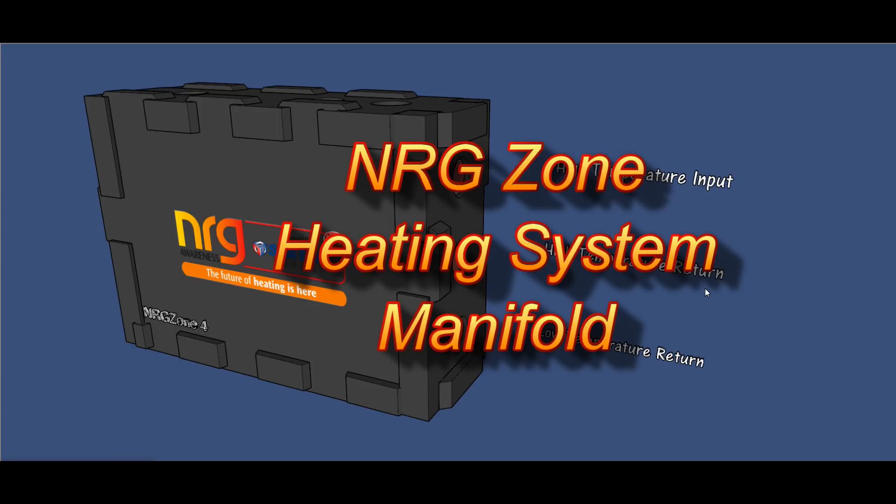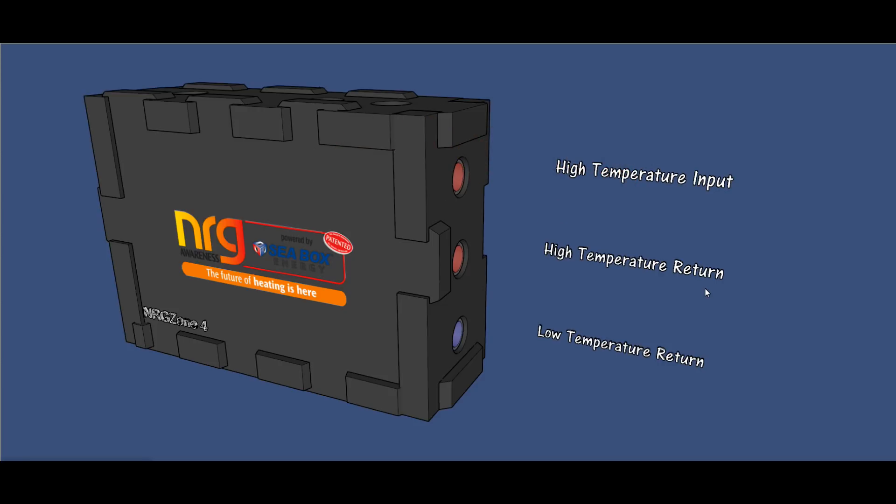Here we have the Energy Zone Manifold. This is the smaller of the standard units, an Energy 4x4. It means you have two zones at the bottom and potentially put a boiler on the left, boiler on the right.